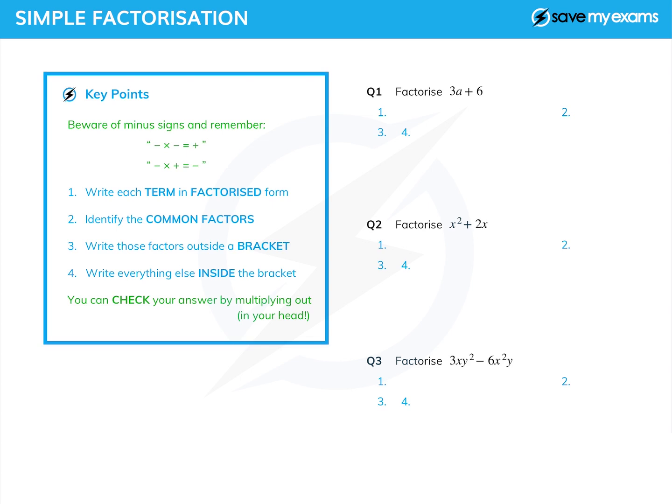Once we've done that, that will allow us to identify the common factors. Once we've identified the common factor, we write those outside the bracket, and then we write everything that's left inside the bracket. Okay, let's do this.